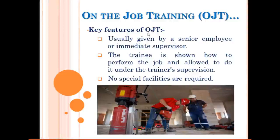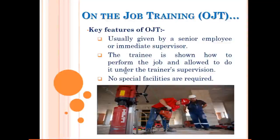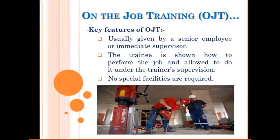The key features of on-the-job training, abbreviated as OJT, are: it is usually given by a senior employee or immediate supervisor. The trainee is shown how to perform the job and allowed to do it under supervision. The new trainee does productive work during the learning process, and we can get quick feedback on their performance. There is no need for expensive off-site facilities. In the picture below, you can see a newcomer or trainee in red outfits working under the supervision of an immediate supervisor at a construction site.